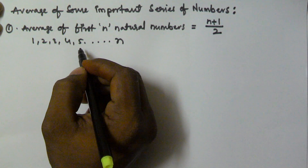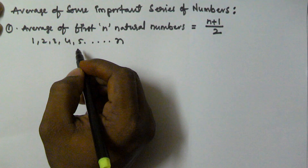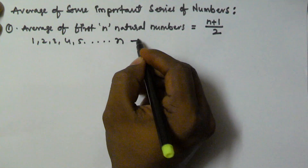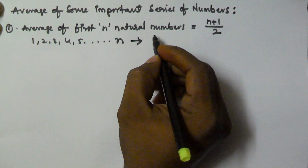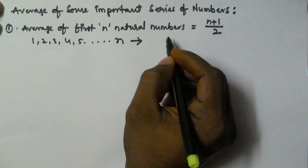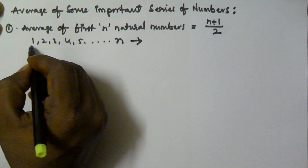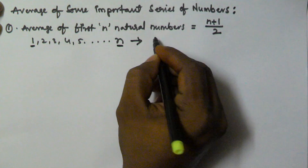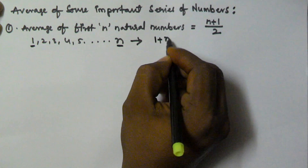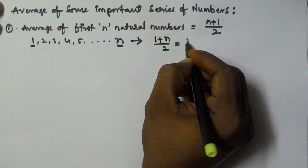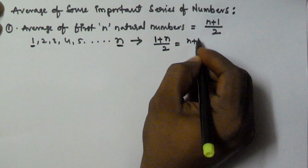As mentioned earlier, if your numbers are in arithmetic progression, the average of the arithmetic series is given by (first number + last number) / 2. In our case, the first number is 1 and the last number is n, so the average is (1 + n) / 2, which equals (n + 1) / 2.